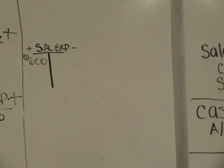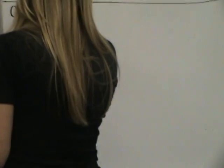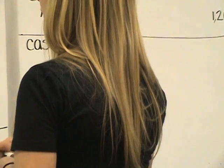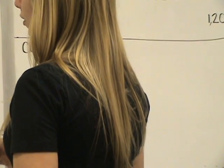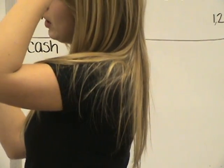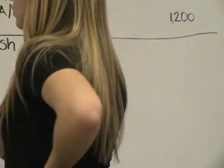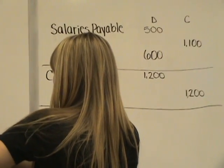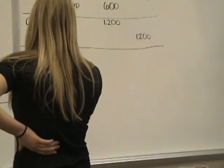Next entry: received $1,400 cash for service performed in November. What accounts are involved? The first thing is to understand the question. Cash is one account. What's the other? We received $1,400 cash from services performed in November — what account is that? It's not unearned service revenue, because unearned means you take the money in advance. In this case we didn't take money in advance; we performed the service.